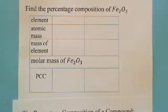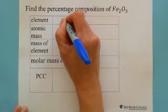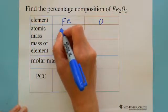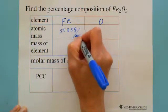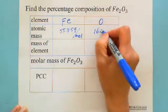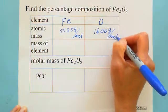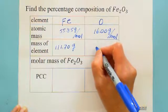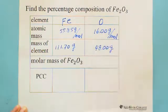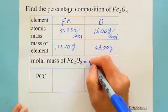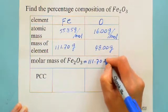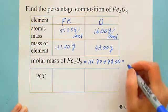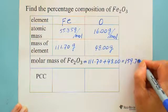I've set up a table. Elements: Fe and oxygen. The atomic mass for iron is 55.85 grams per mole, and for oxygen it is 16.00 grams per mole. The mass of elements: we already calculated 111.70 grams per mole for iron and 48.00 grams per mole for oxygen. Adding them: 111.70 plus 48.00 gives us a total of 159.70 grams per mole.